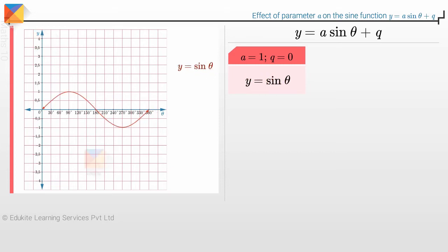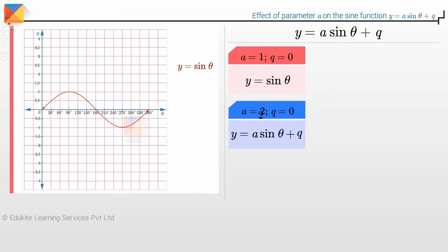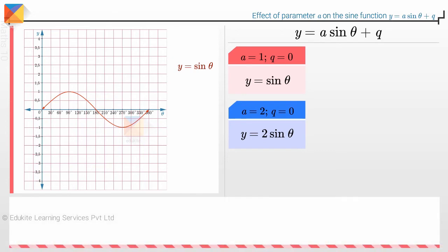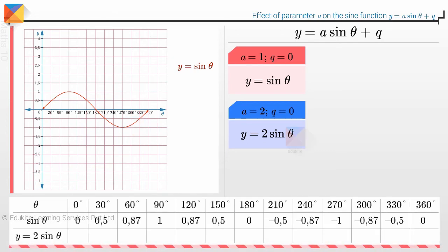Now let us change the value of a to 2. With a equals 2 and q equals 0, the function is now y equals 2 sine theta. To calculate the y-values for different theta values when a equals 2, we simply multiply all the previous values of y by 2.